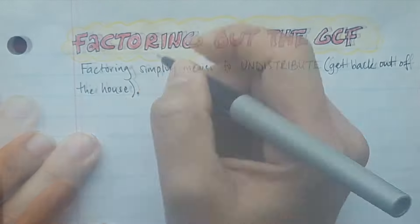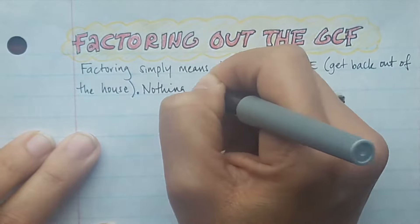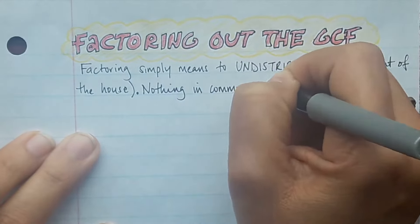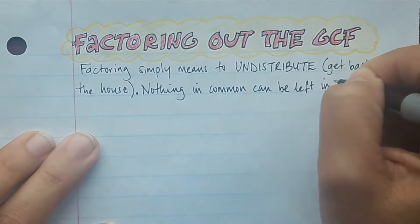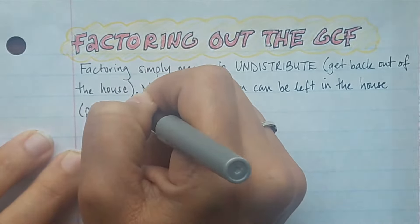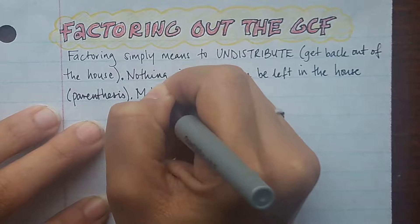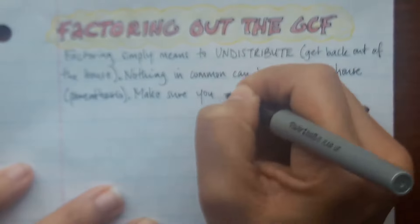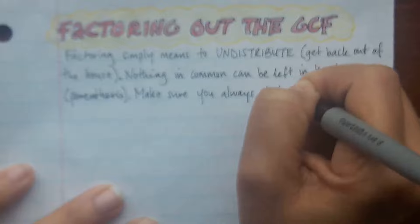It's very important to understand that nothing in common can be left in the house. What do I mean by house? Just stands with parentheses. Make sure that you always factor out the GCF, the greatest common factor.